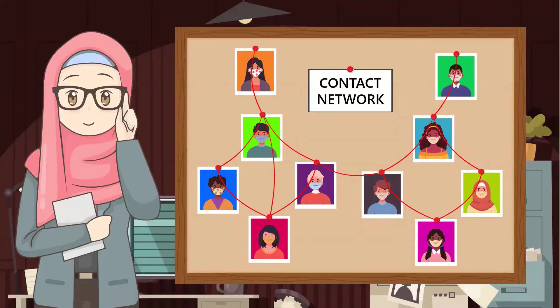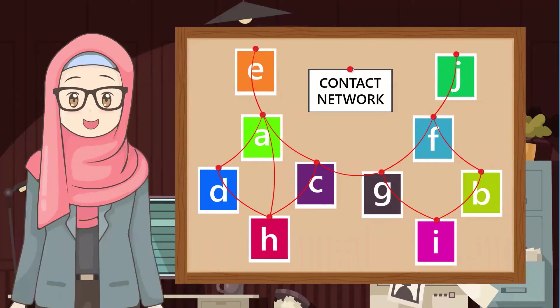On our detective board, we have information about the suspects and their contact with each other. We shall call this our contact network. At first glance, you might say it's not much of a case. Obviously, the person with the most contact will be the culprit. Let's see.